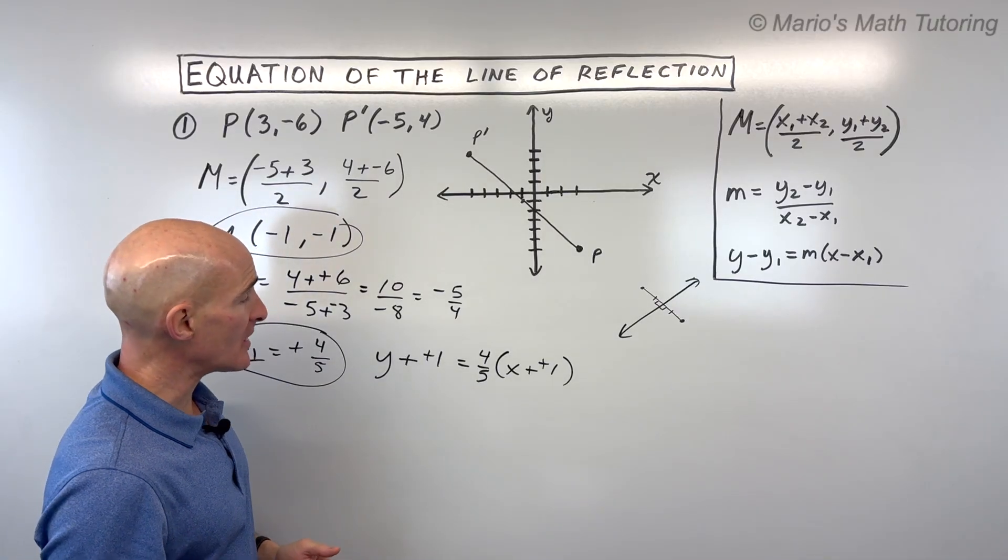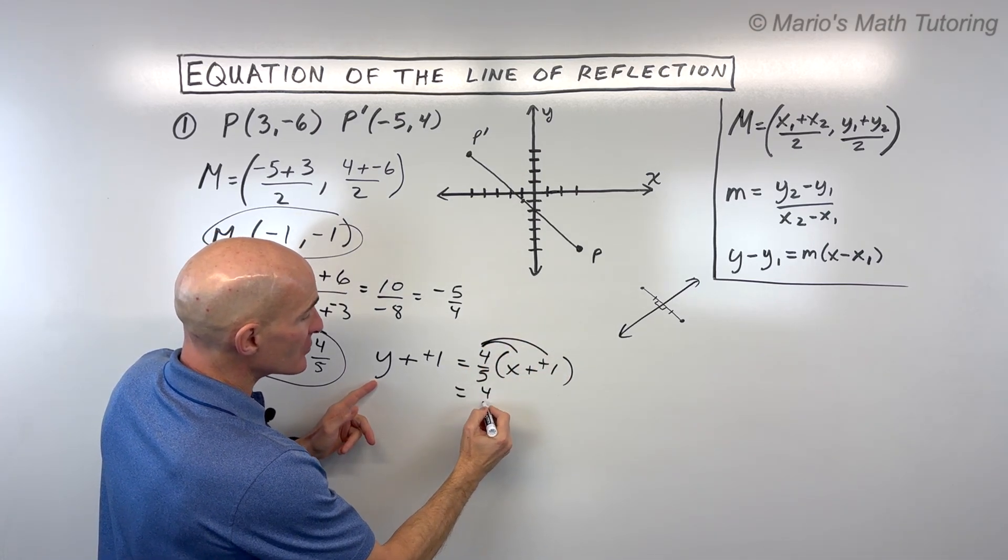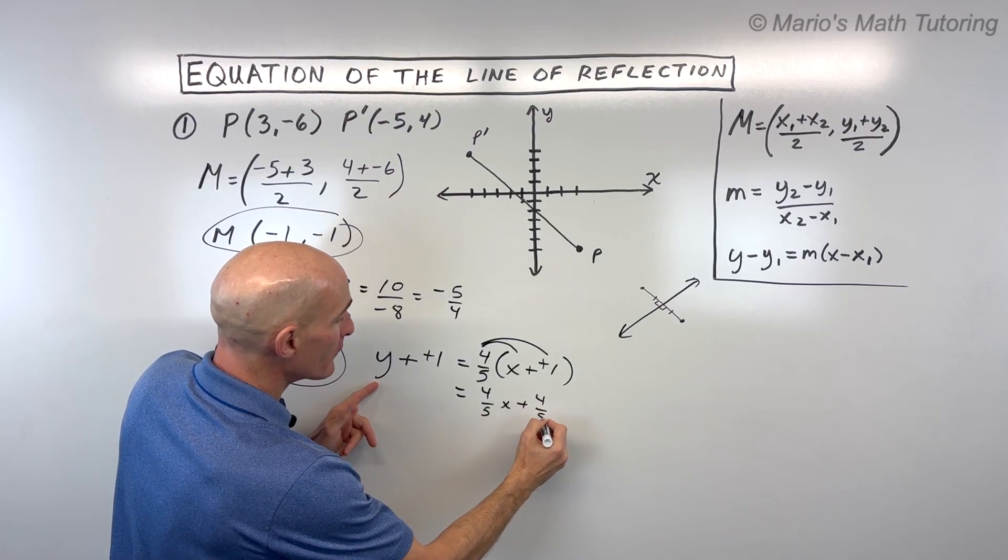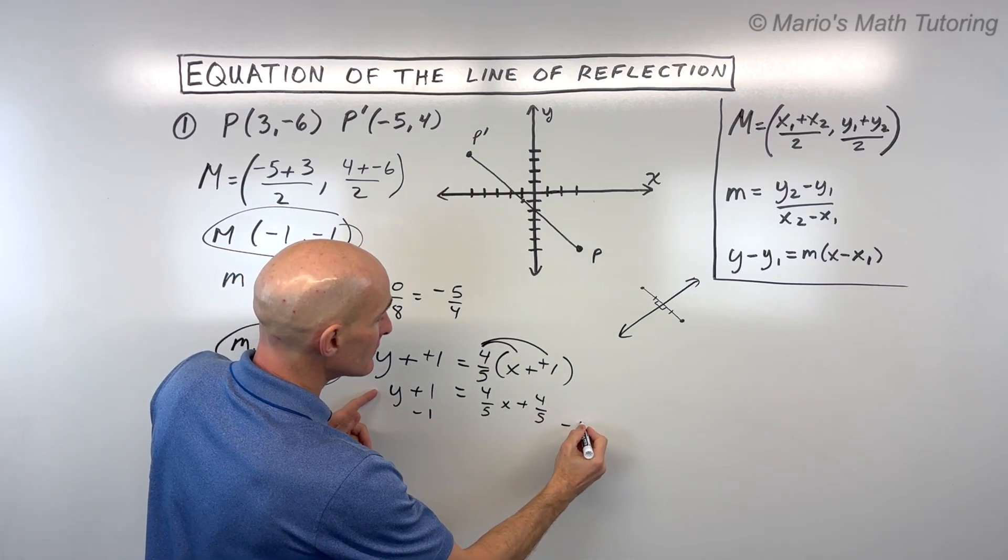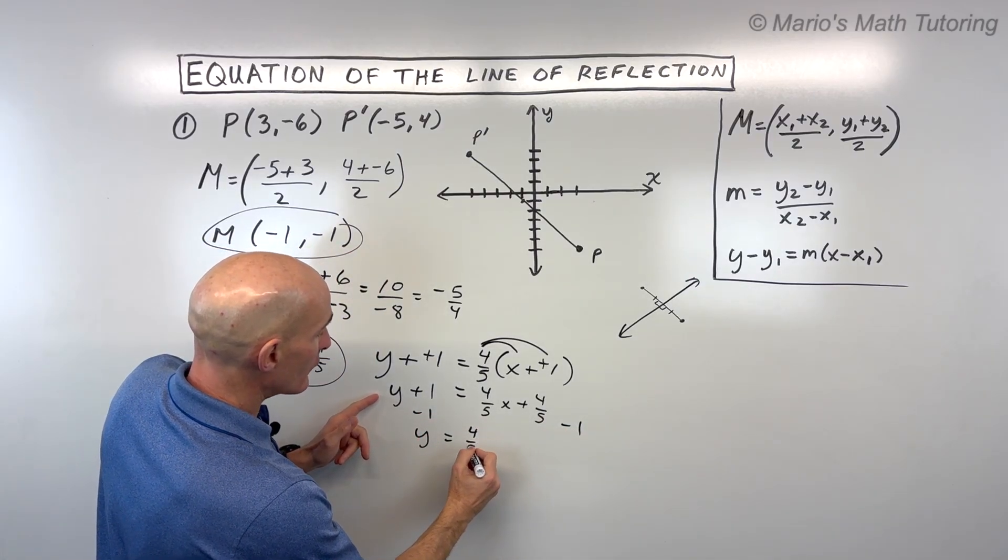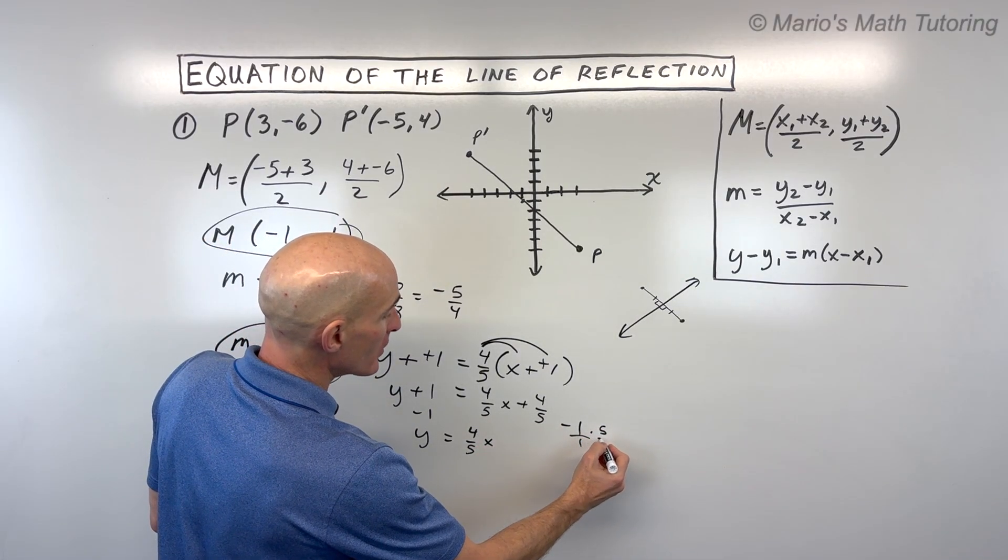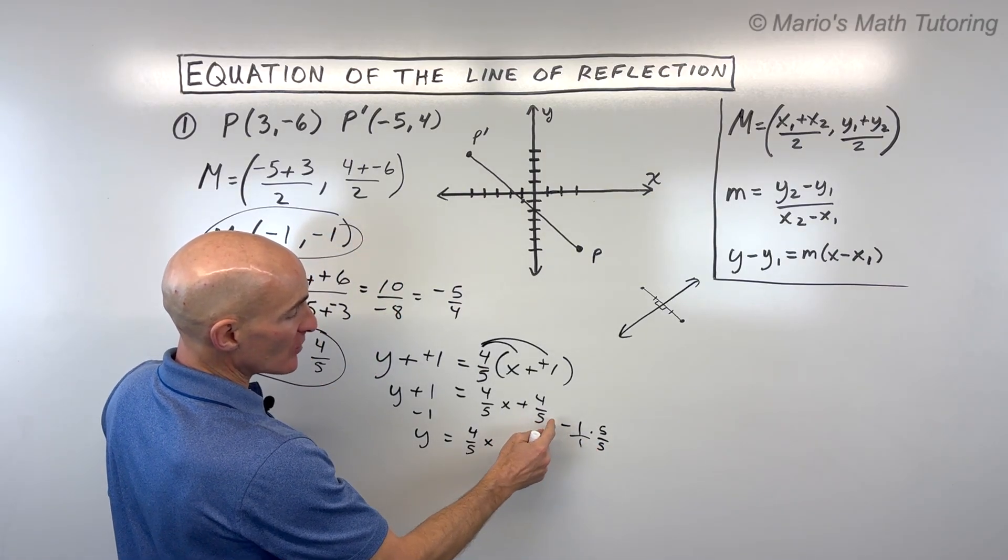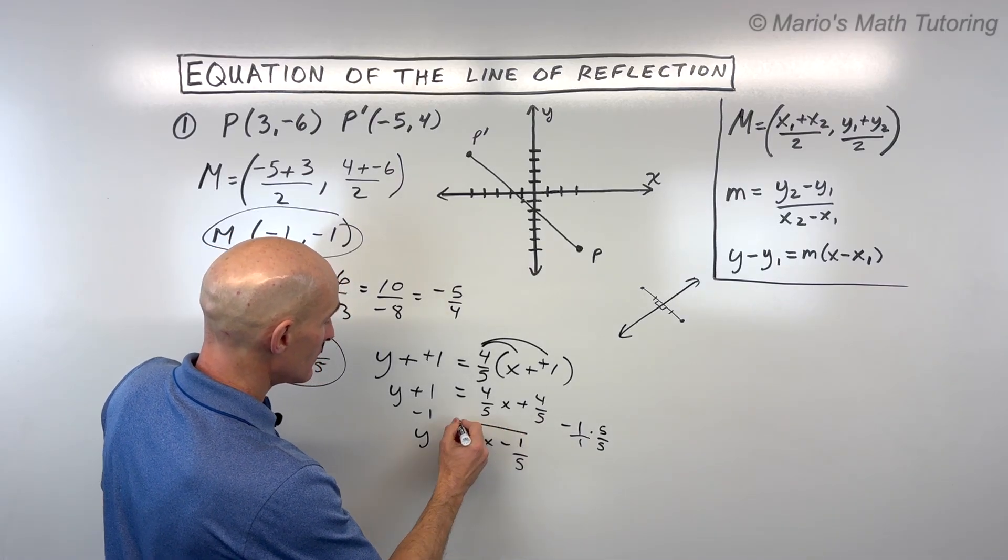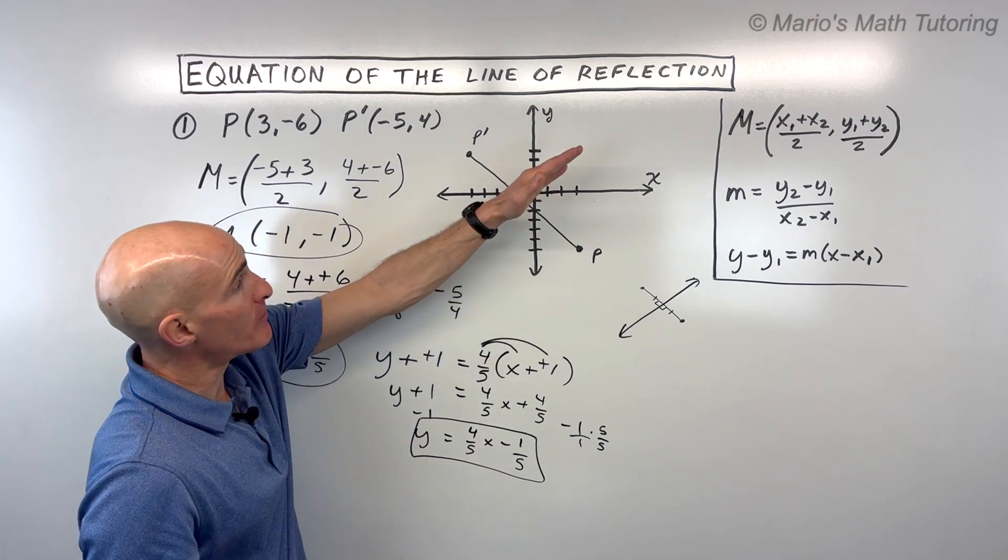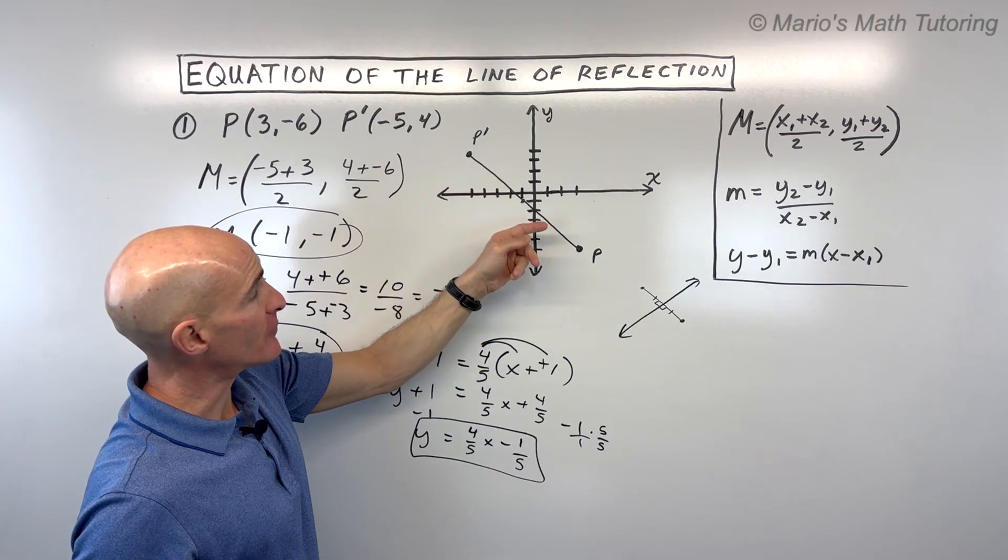Let's rearrange it into the slope intercept form, the y equals mx plus b form. We'll do that by distributing. So that comes out to 4 fifths x plus 4 fifths. Here, I'm just going to subtract 1 from both sides to get y by itself. So now we get 4 fifths x. Now, negative 1, this is like negative 1 over 1. I'm going to multiply the numerator and denominator by 5 to get common denominators. So we have 4 fifths minus 5 fifths, which is negative 1 fifth. So that's the equation of our perpendicular bisector, which is the line of reflection that we're folding over to get from P to P prime.